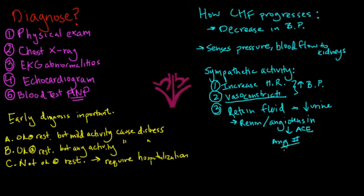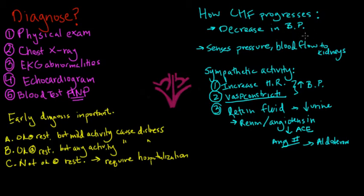Angiotensin 2 has very profound effects: it will stimulate vasoconstriction, and it will lead to aldosterone secretion, which will increase fluid retention. Ultimately, retaining fluid increases blood pressure to combat the decrease — these are the things our body does as a normal physiological response to a decrease in blood pressure, to try to restore it.